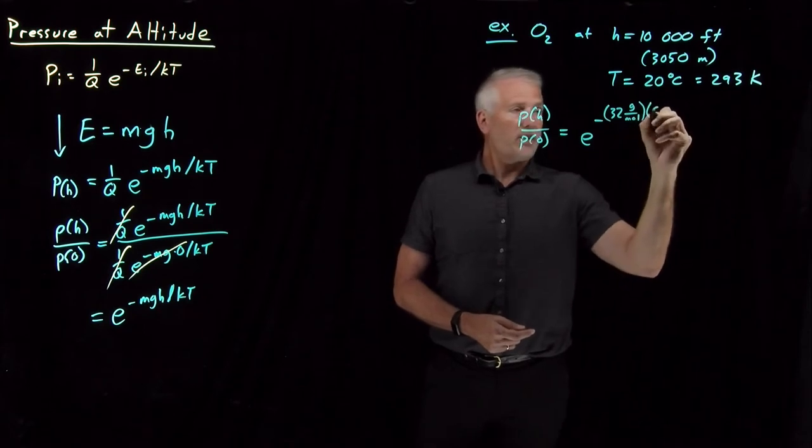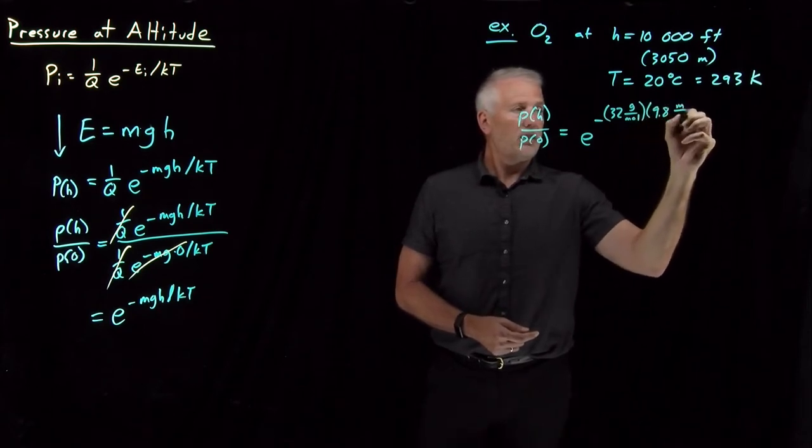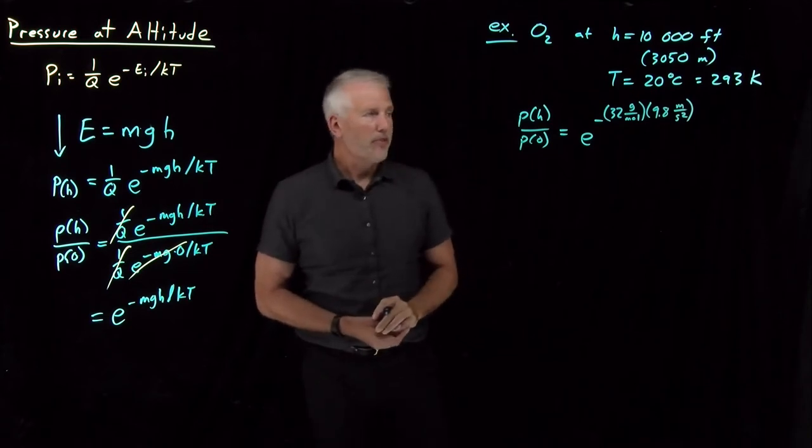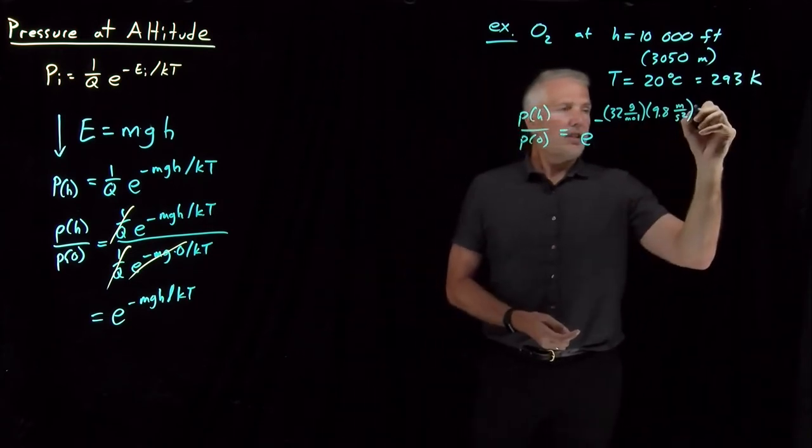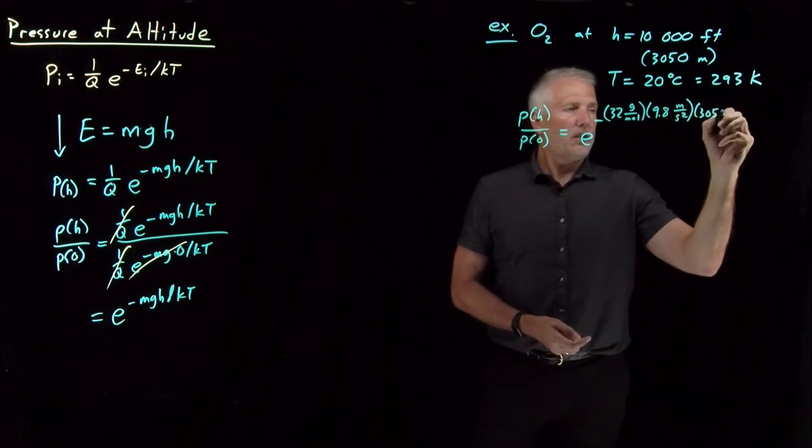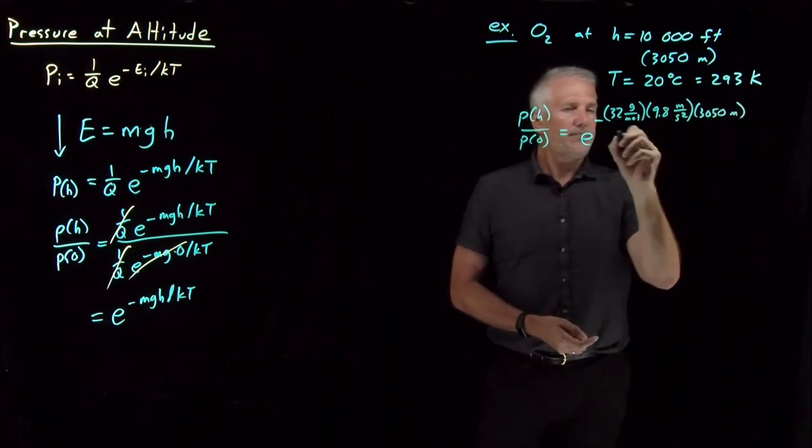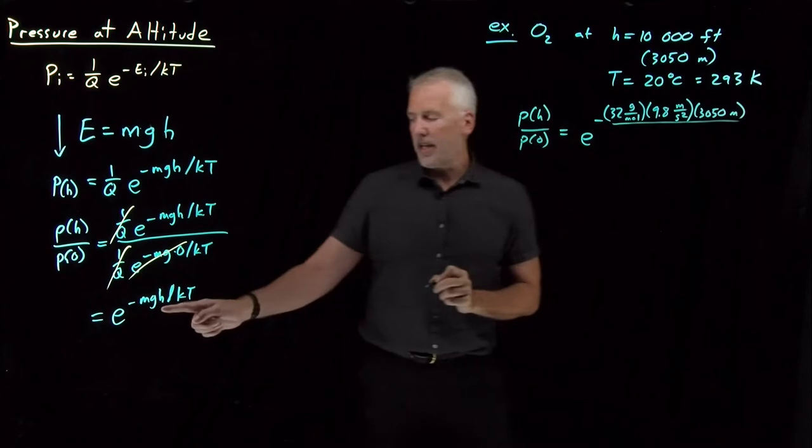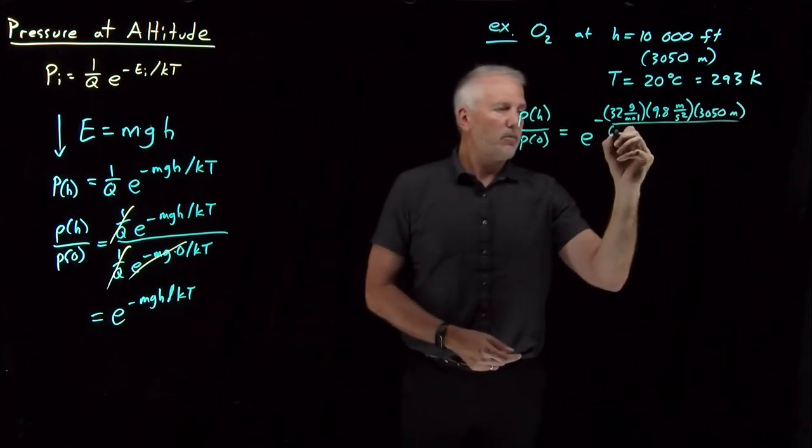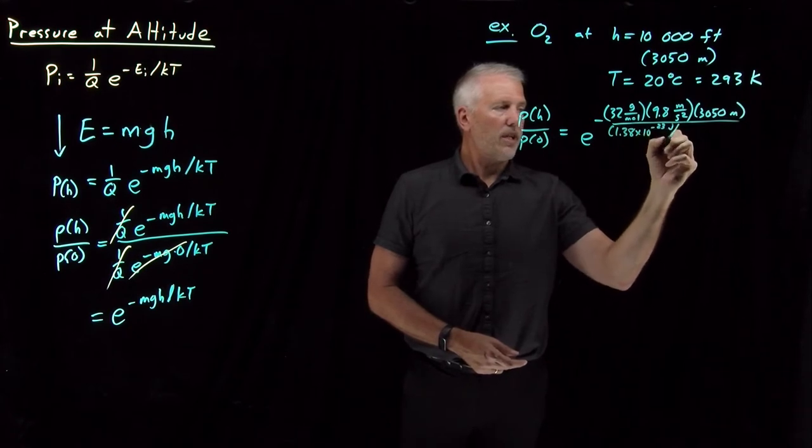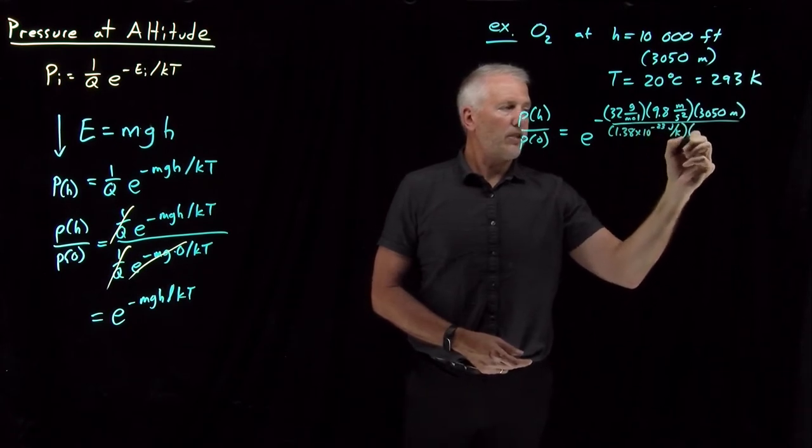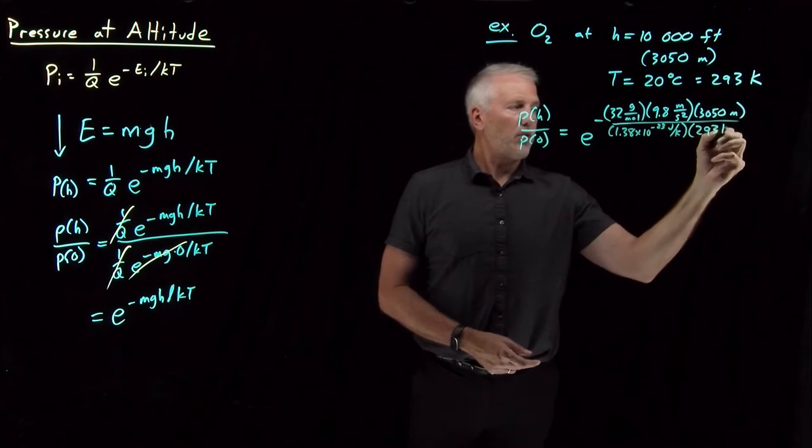g, the gravitational constant, as you may remember from a physics course, 9.8 meters per second squared. h is 3,050 meters. I'm going to divide that mgh by kT. Boltzmann's constant, 1.38 times 10 to the minus 23 joules per Kelvin, and the temperature 293 Kelvin. So all that with the negative sign is up here in the exponential.